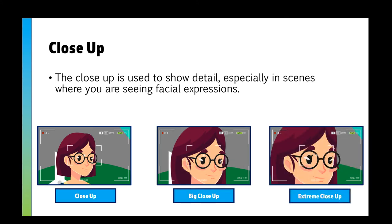The close-up is used to show detail, especially for facial expressions. It might be that somebody is testifying in court and you want to show them sweating or looking nervous — you might do an extreme close-up for that. Some films have clips showing just somebody's eyes, maybe to see where they're looking. Or you might just have a nice headshot using a close-up from the neck upwards.